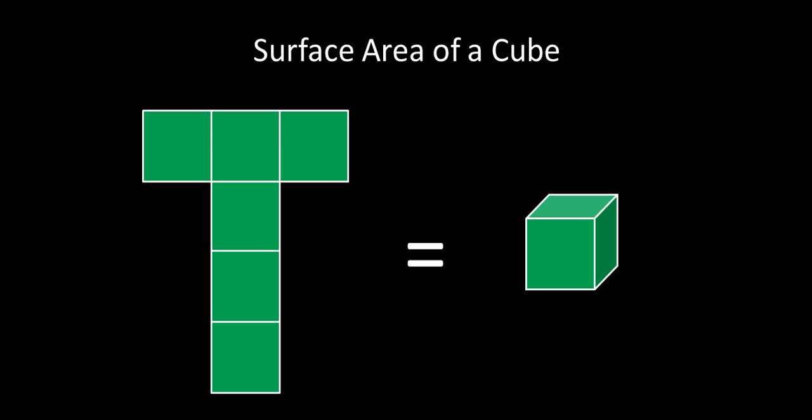Remember, surface area is like when you're painting over top of a figure. It's covering the outside, so it's that green that covers the outside of the cube.